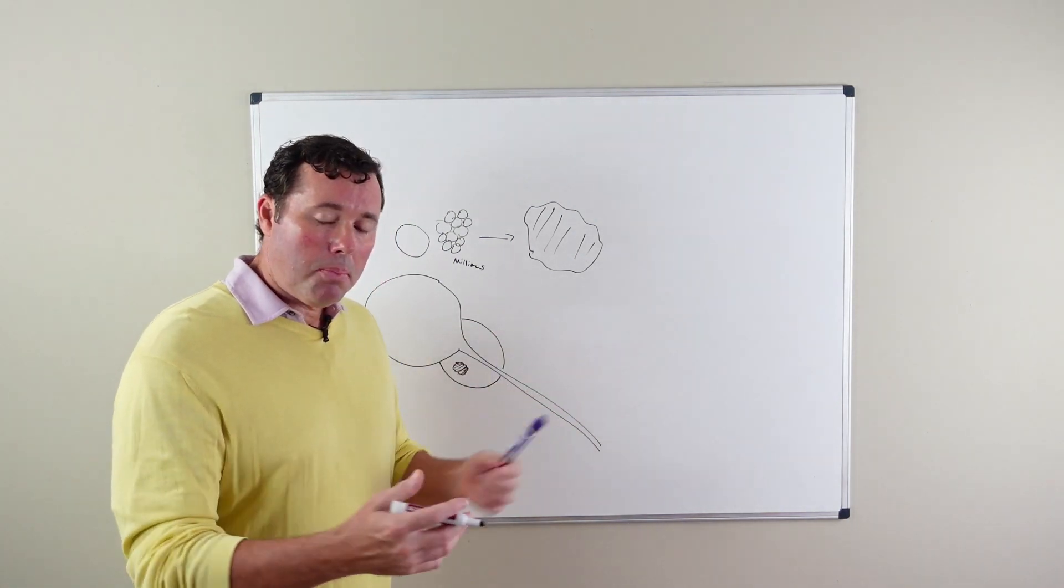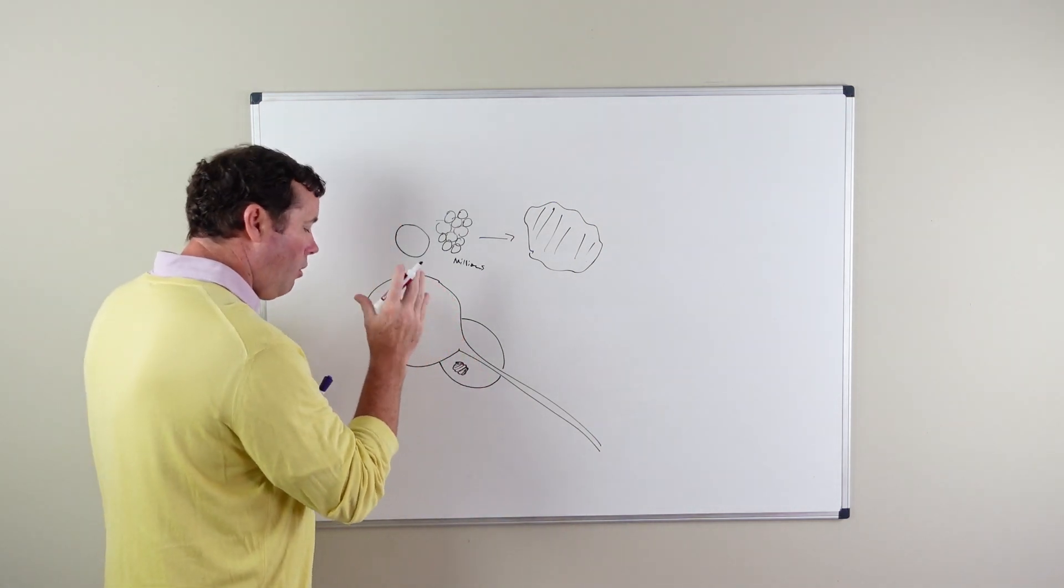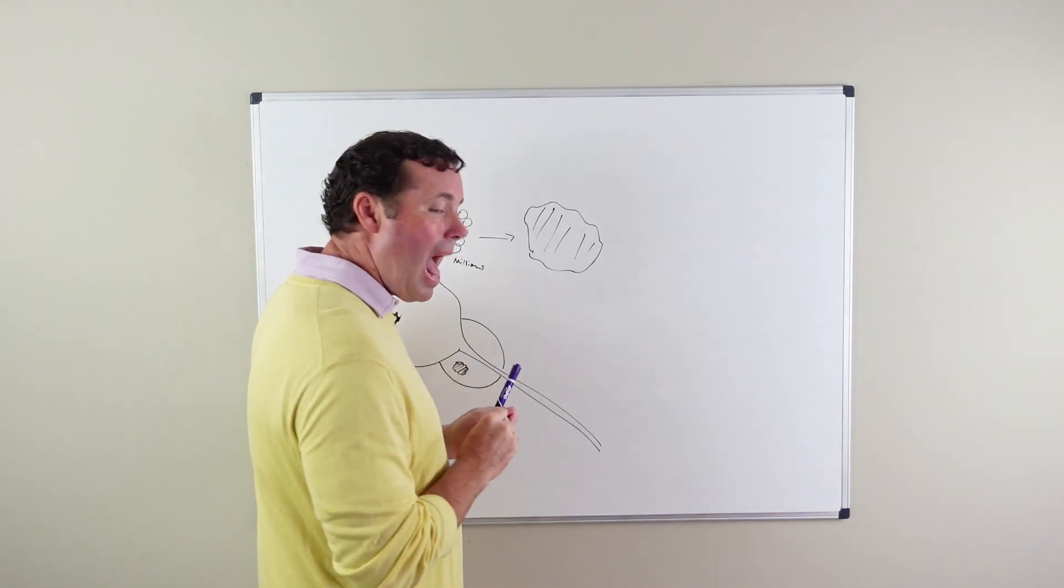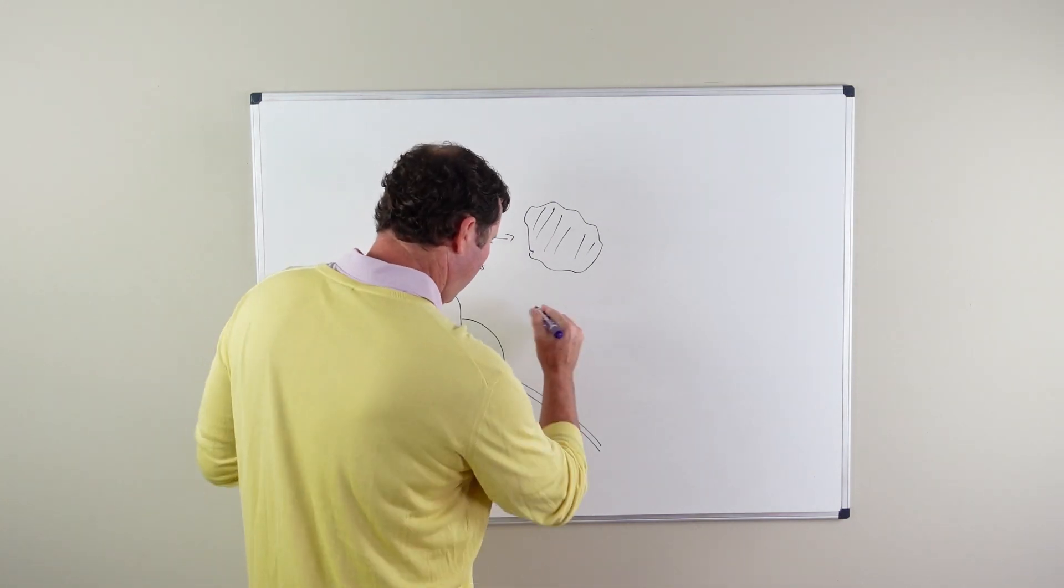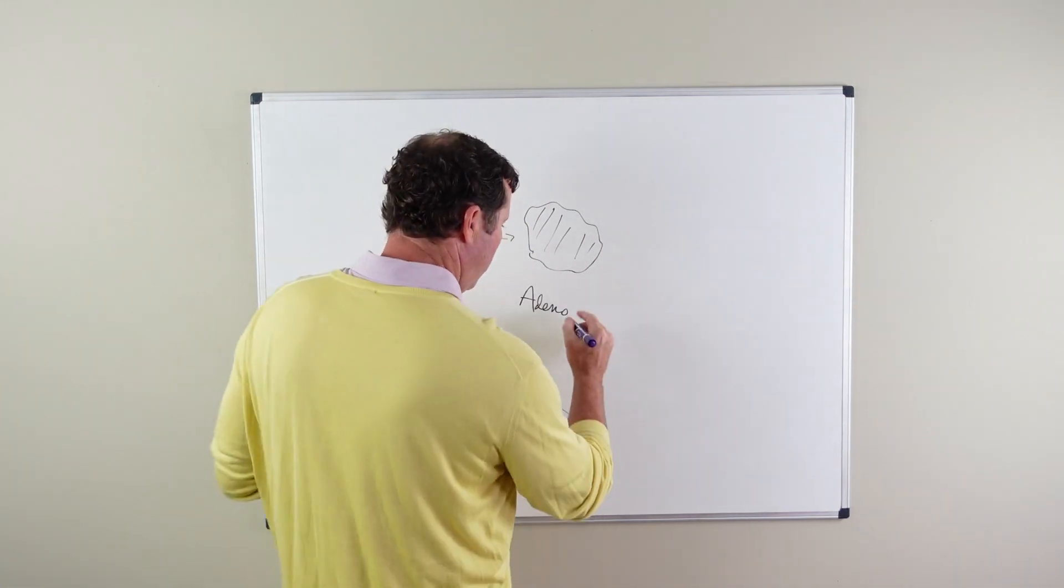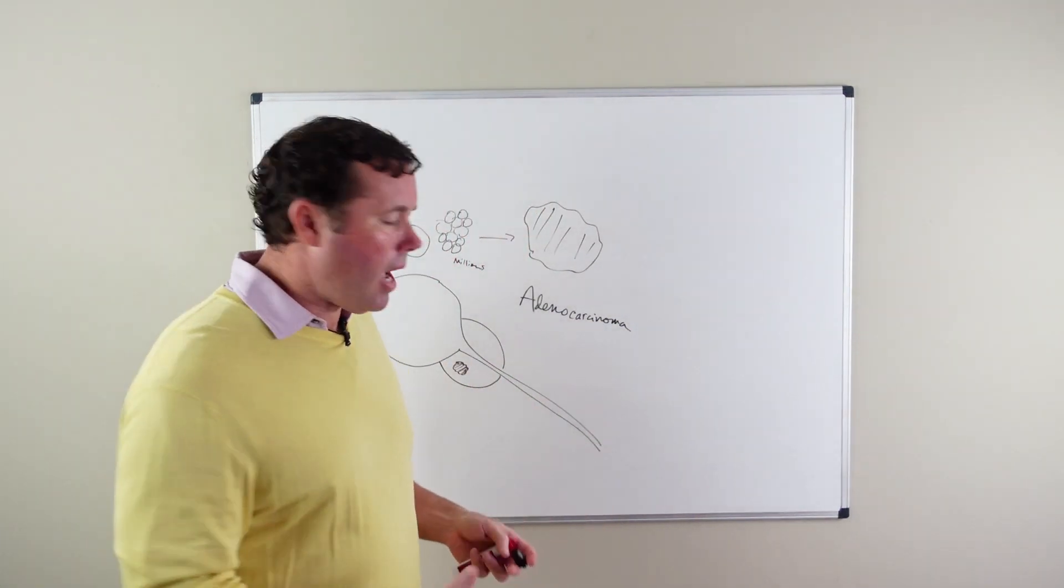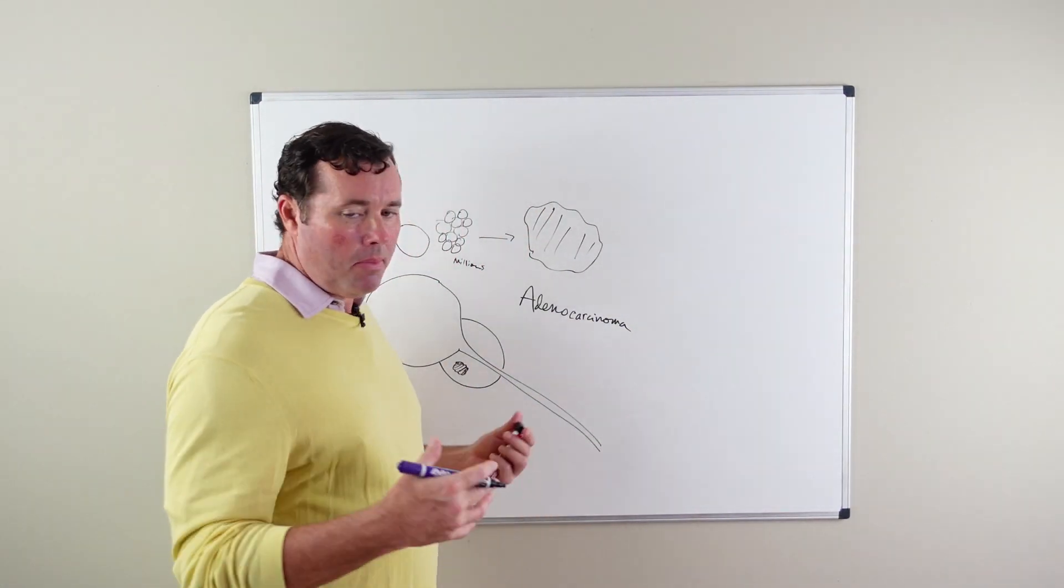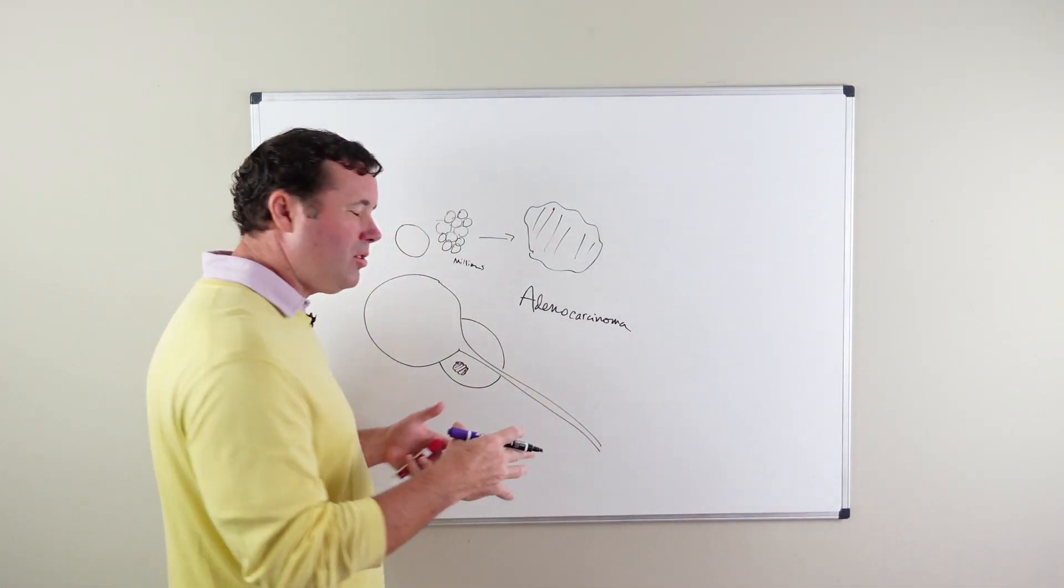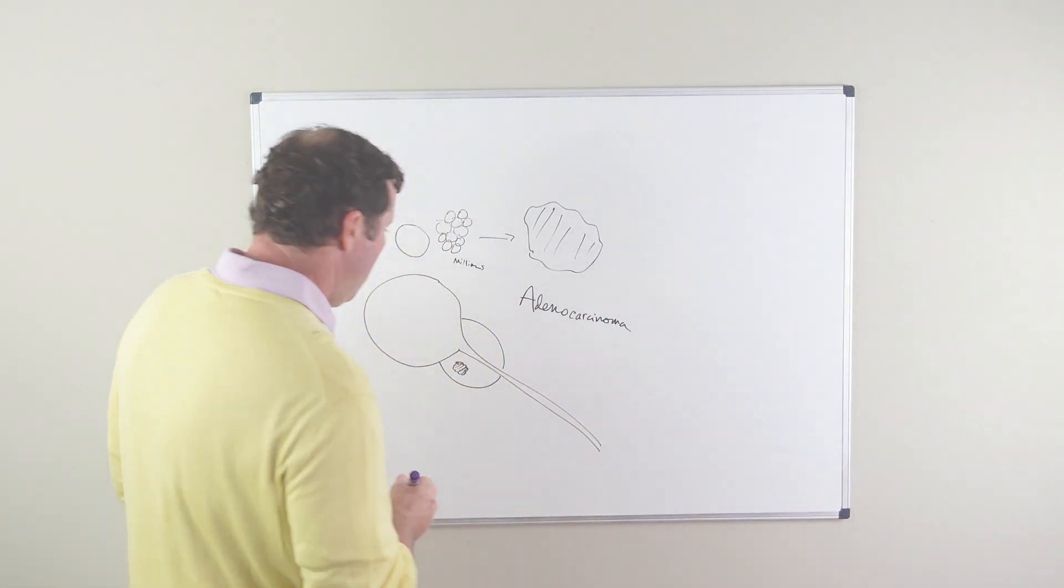Most of these cancers are what are called adenocarcinomas. Most prostate cancers are gland-like cancers, so adenocarcinoma. But there are some abnormal types of prostate cancers like neuroendocrine tumors or sarcomas, but those are rare. Probably 99% of all prostate cancers will be adenocarcinomas.